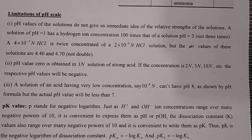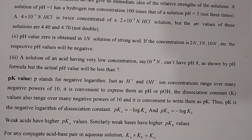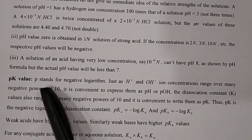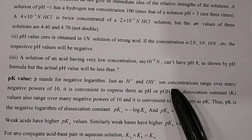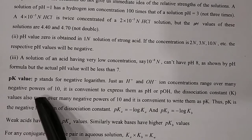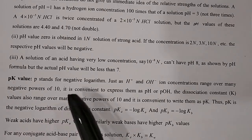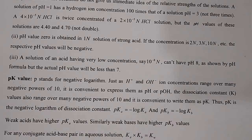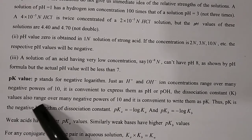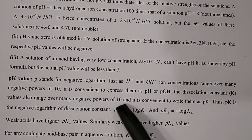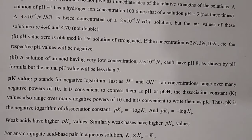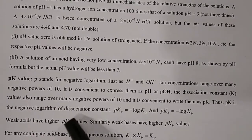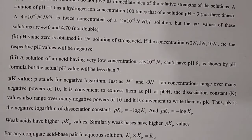Now let's discuss pK values. The letter 'p' stands for negative logarithm. Just as H+ and OH− ion concentrations range over many negative powers of 10 and are conveniently expressed as pH or pOH, the dissociation constant K also ranges over many negative powers of 10 and is conveniently written as pK. Thus pK is the negative logarithm of the dissociation constant.